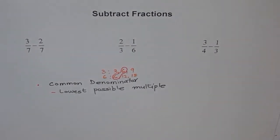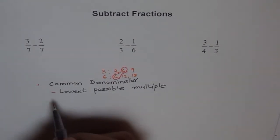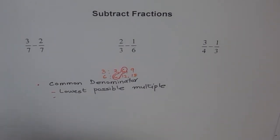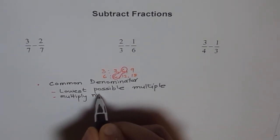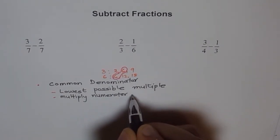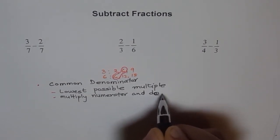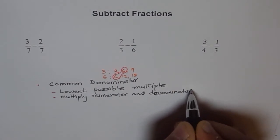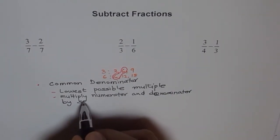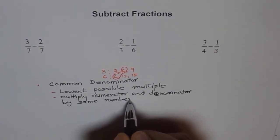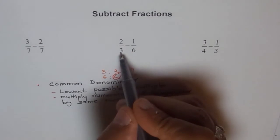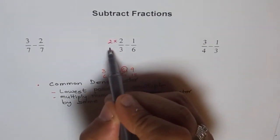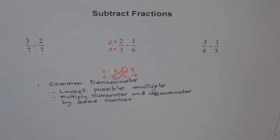To get that lowest possible multiple, you have to multiply both the numerator and the denominator by the same number. For example, to make the denominator 3 become 6, the number is 2 — 3 times 2 is 6 — so we multiply both the numerator and denominator by 2. That gives us the same denominator of 6.